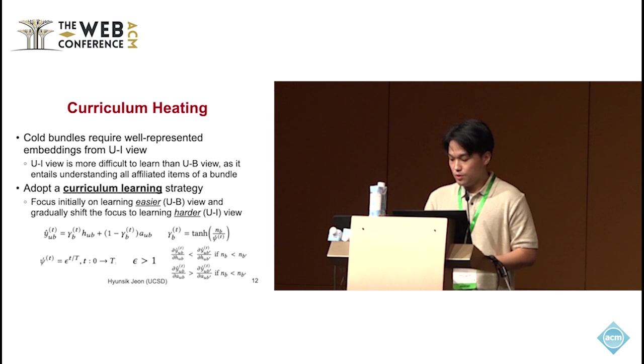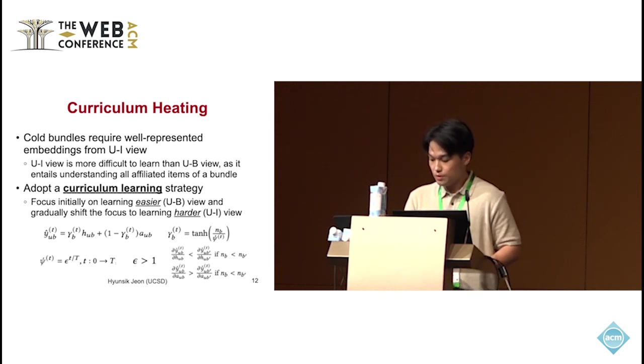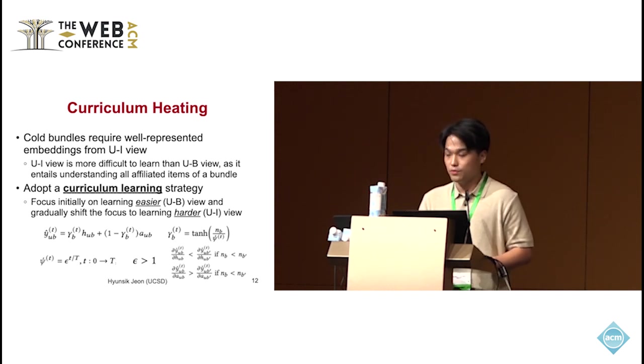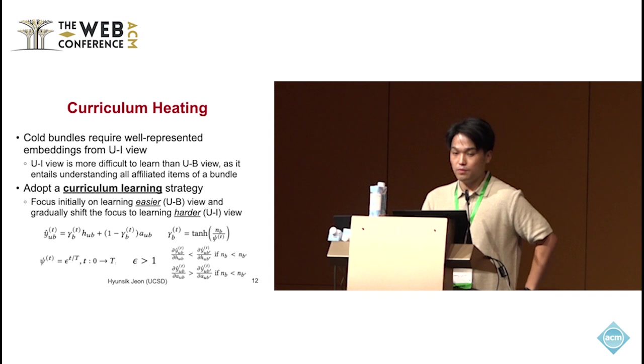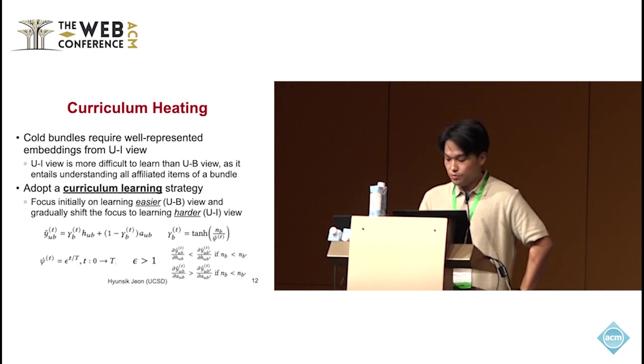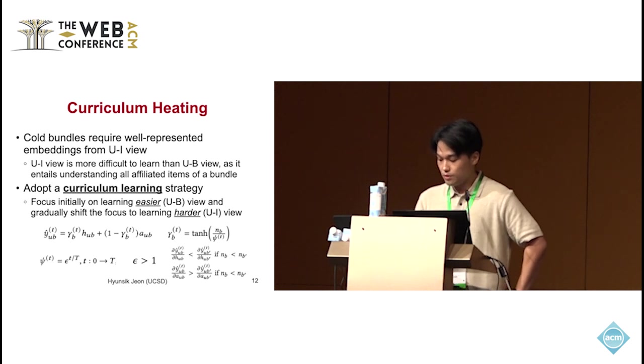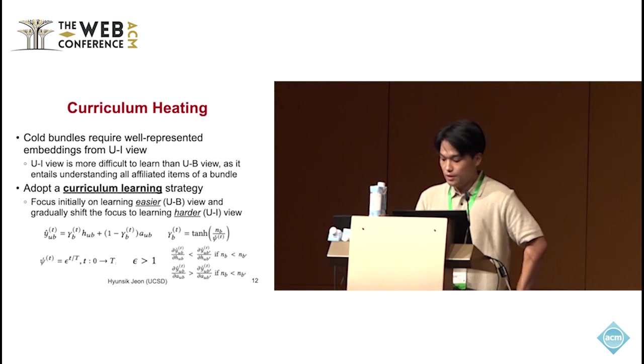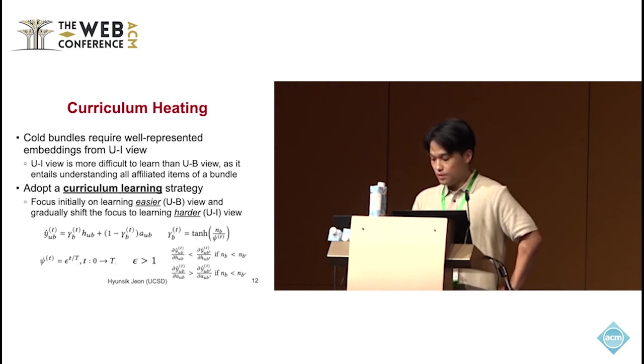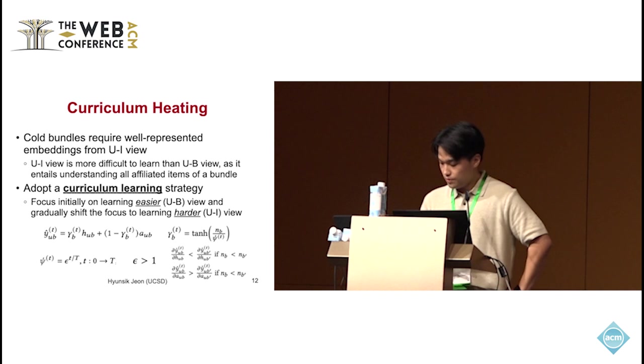Cold bundles which lack user interactions require well-represented embeddings from the user-item view. Learning these embeddings is challenging because it involves understanding all affiliated items of a bundle. To address this, we adopt the curriculum learning strategy called curriculum heating. Initially, we focus on learning the easier user-bundle view embeddings. And as training progresses, we gradually shift the focus to the more complex user-item view embeddings.